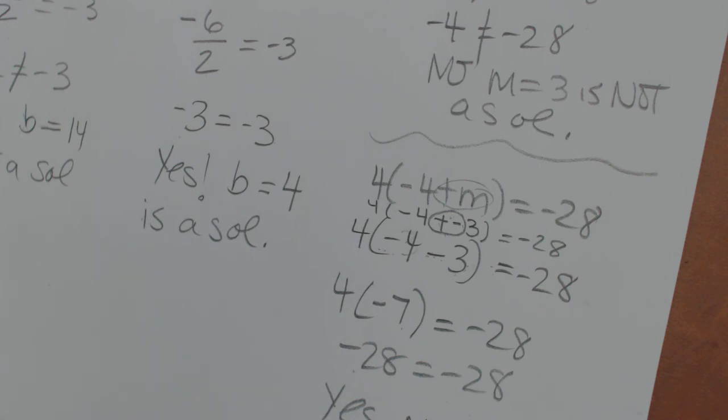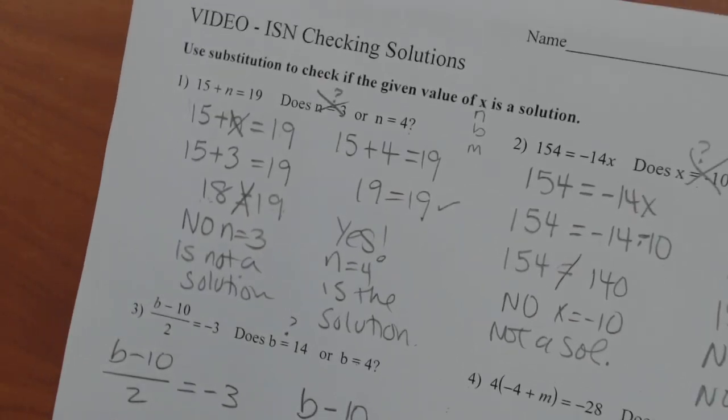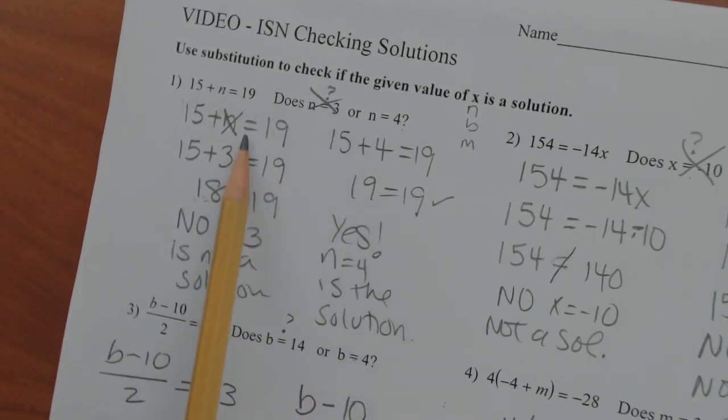So please be careful of your signs. If you do want practice, let me know. But this has been checking solutions using substitution when we put the number in place of the variable and then see if the equation balances out, see if the two sides are equal. Now on to practice. I hope this helped. See you later.